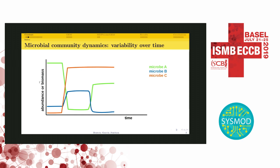In this example, we have a community with three microbes, and we can see in the plot how the abundance or biomass of the different microbes changes over time. At some points there are abrupt increases or decreases in the biomass that usually correspond to some external perturbation — for example, the appearance of a new microbe or a change in the medium composition, in the availability of nutrients. We can consider that there are different microbial community states depending on the composition of the community, the proportion of the different microbes.